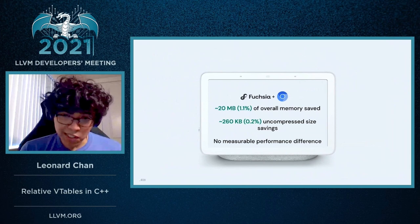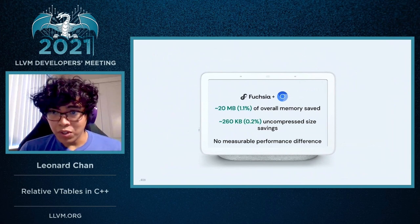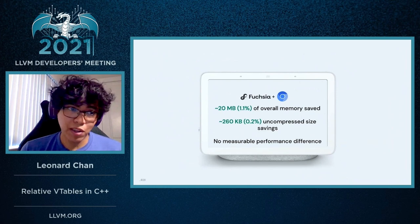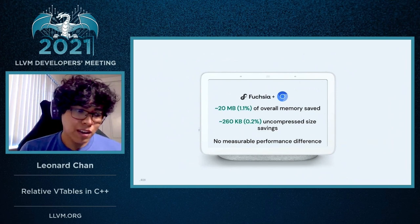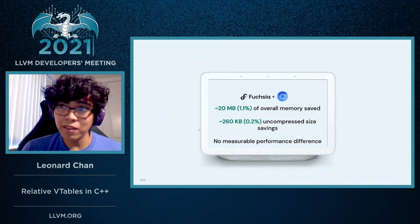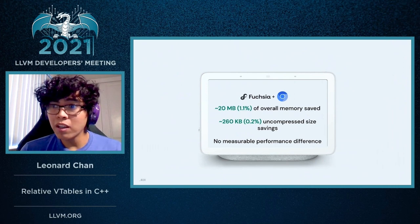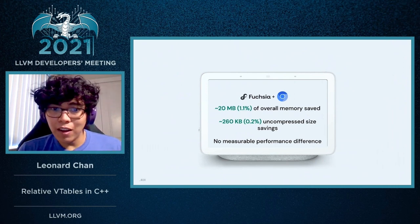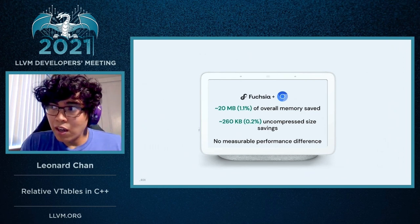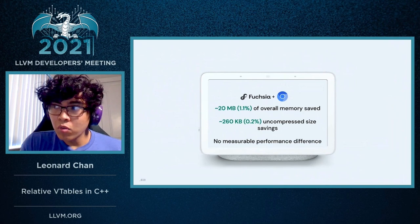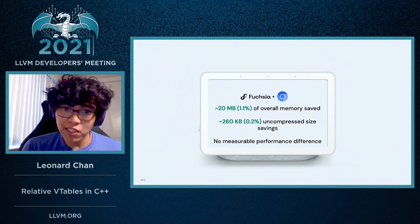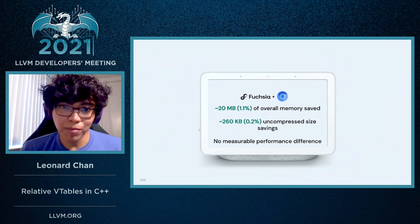That could be because of a balance between the .text increase and .data decrease. For Fuchsia as a system, the Fuchsia system doesn't necessarily use a lot of VTables. We see them more from user applications, so any size savings could be lost within page rounding if it doesn't exceed the 4-kilobyte page rounding. It's also worth noting that we didn't see any measurable performance difference.